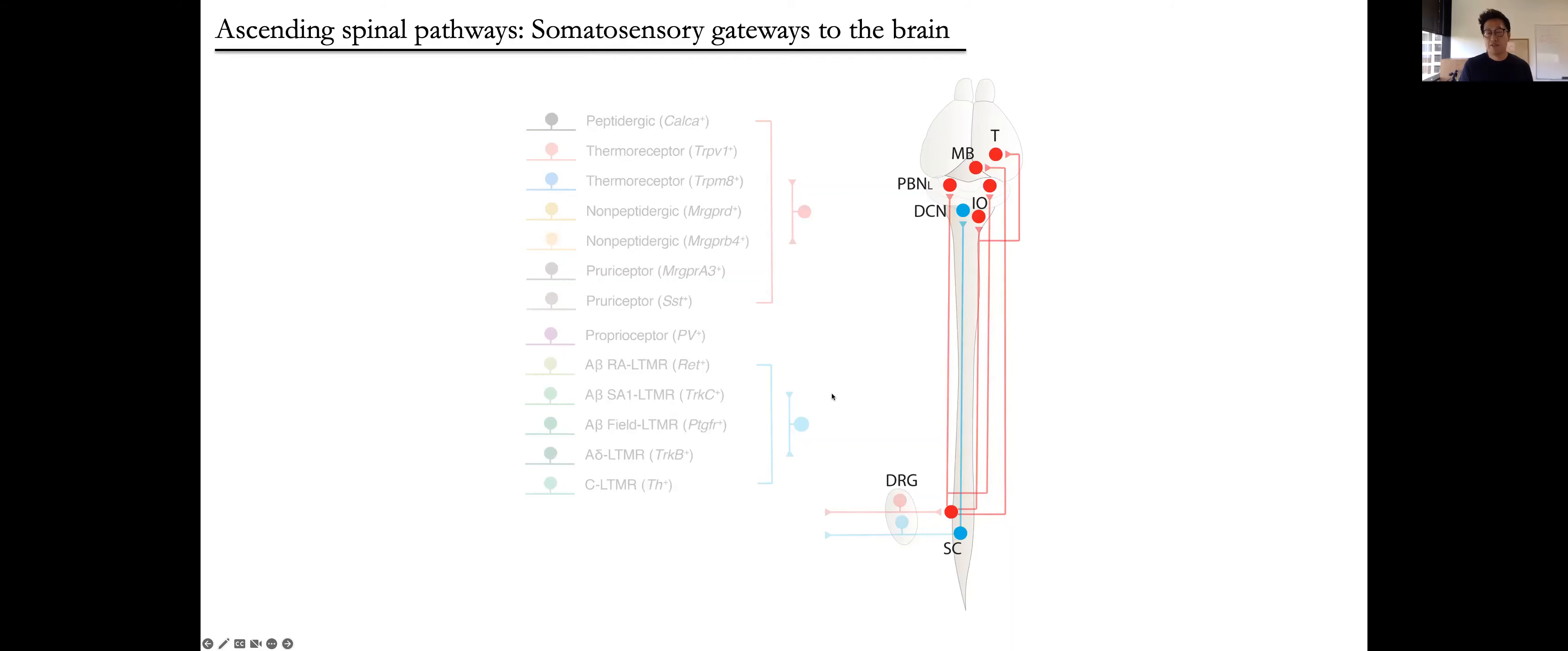In contrast, very little is known about how these peripheral signals are integrated and processed within the spinal cord, and how these signals are conveyed to the brain by spinal projection neurons to generate somatosensory perception and behavior responses. These projection neurons are attractive therapeutic substrates for treating somatosensory disorders such as pain because they are somatosensory gateways to the brain.